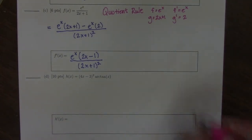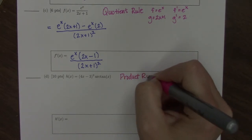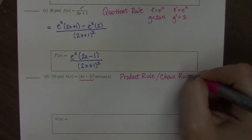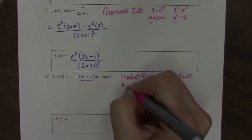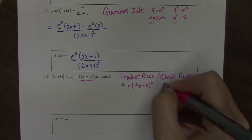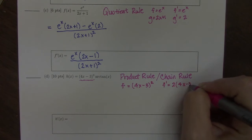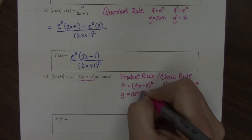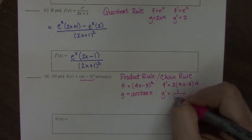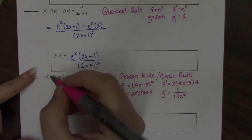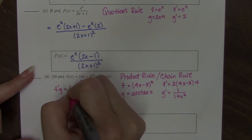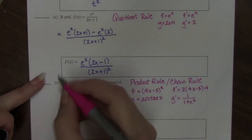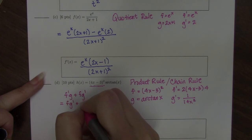The last one is going to be a product rule, and the first piece of the problem is going to require a chain rule when we take its derivative. The first term is 4x minus 3 squared. The derivative of the first term is 2 times 4x minus 3 — that's the derivative of the outside function — and then applying the chain rule I multiply by another 4. The second term is arctan of x, and the derivative of arctan of x is 1 over 1 plus x squared. The product rule is f prime g plus f g prime.